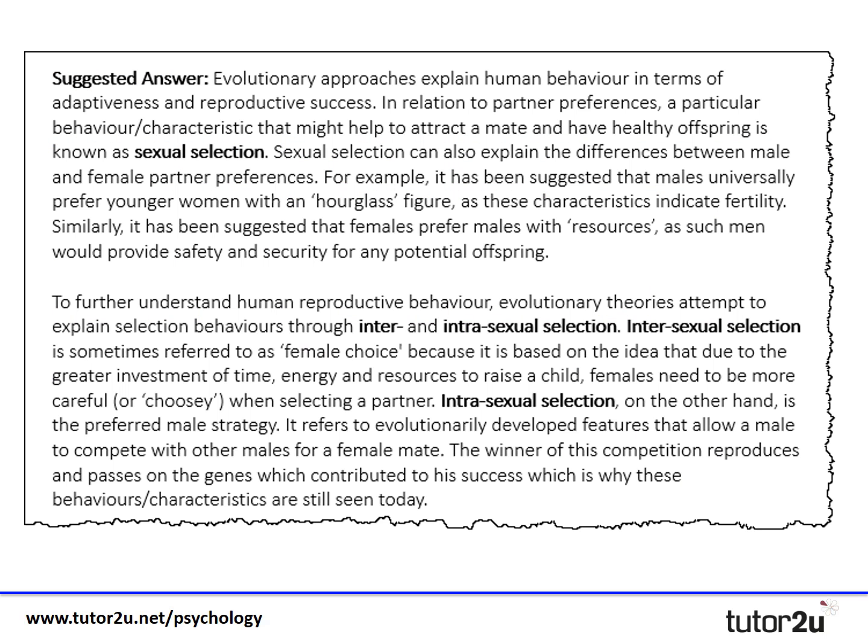Evolutionary explanations explain human behavior in terms of adaptiveness and reproductive success. In relation to partner preference, a particular behavioral characteristic that might help to attract a mate and have healthy offspring is known as sexual selection. It's important to acknowledge the exact question which asked about partner preferences specifically, not just relationships generally.